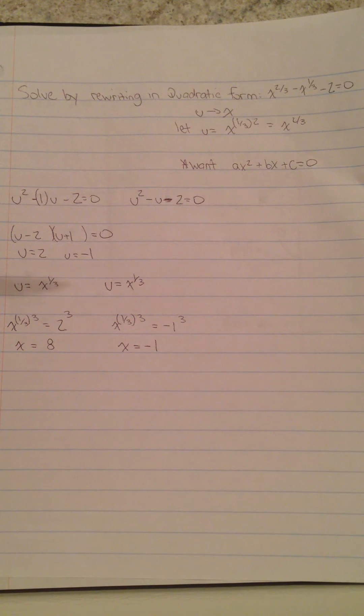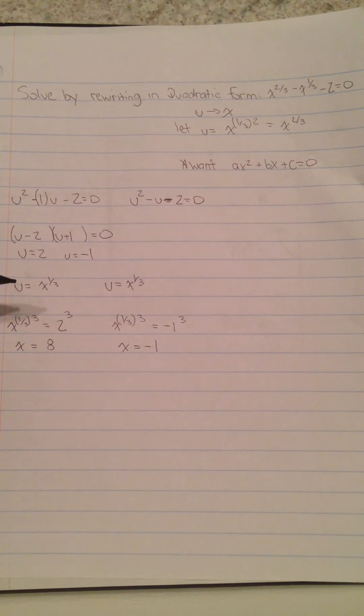Now we need to bring this back and solve for x, so we said u = x^(1/3). To get rid of the one-third, we're going to cube this by three, and we're going to have to do it to both sides, so these will cancel.